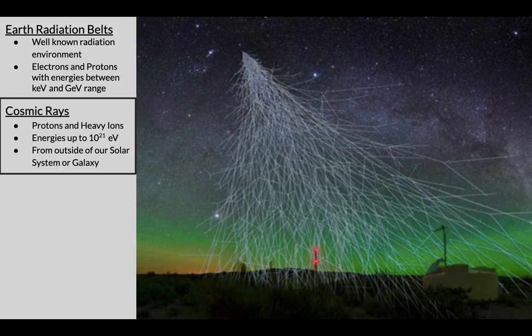Cosmic rays are an energetic background composed of protons and heavy ions with energy that goes up to 10 to the 21 electron volts. These particles can come from our galaxy or even from the outside.